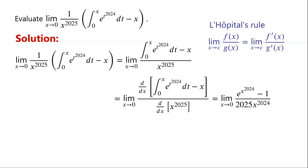The derivative of x to the power of 2025 with respect to x is equal to 2025 times x to the power of 2024. We can easily check that when x tends to 0, both the numerator and the denominator tend to 0.